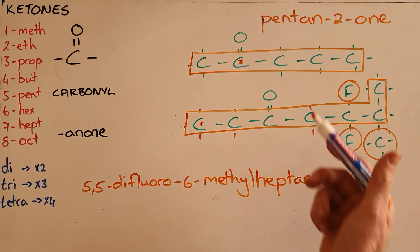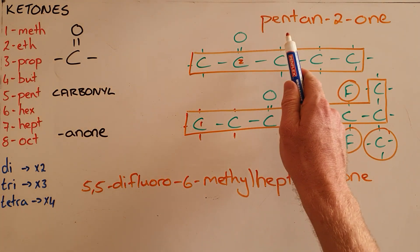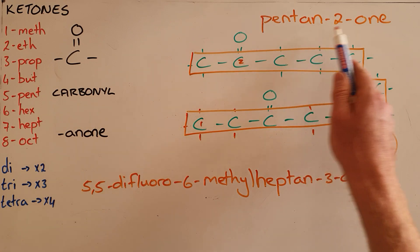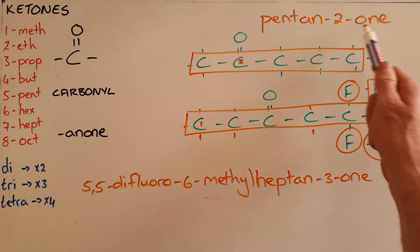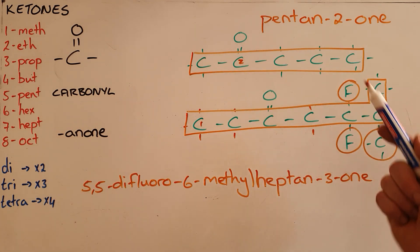It is important to see that this is very similar to an aldehyde, but you would never have a pentan-1-one because if it was 1-one, that would mean that the carbonyl group is on the first carbon, which would make it an aldehyde.